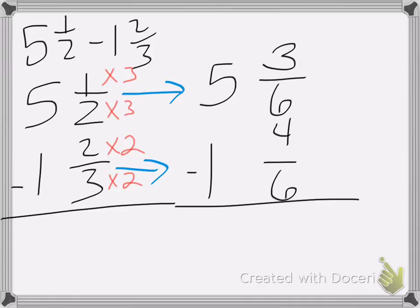Now I have the problem that I cannot take 4 sixths away from 3 sixths. So I need to borrow from the 5. 5 becomes a 4. And I need to add 6 sixths to my current fraction. So 3 sixths plus 6 sixths is 9 sixths. So I'm going to erase that and fix it. 9 sixths.